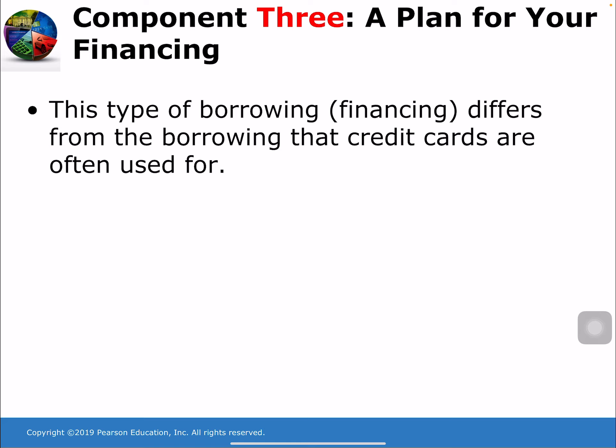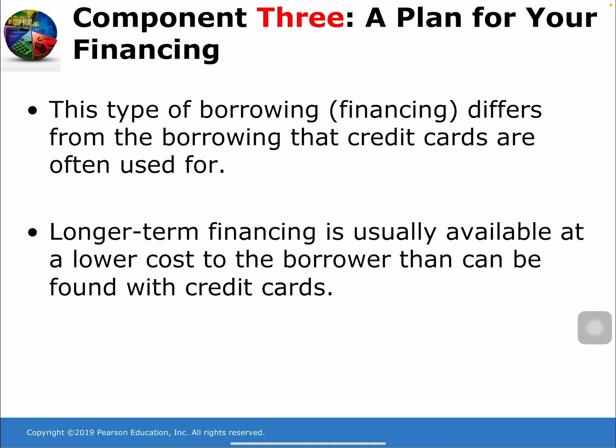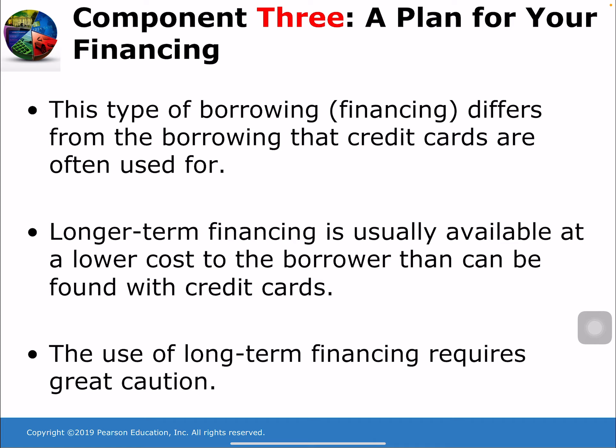This type of long-term financing differs from borrowing that credit cards are often used for. Long-term financing is usually available at a lower cost to the borrower than credit cards. So for a home, car, or boat, it's much cheaper to borrow through a bank or financial institution. However, long-term financing requires great caution — if you cannot pay back the money you borrowed on a car, the lender can repossess it. You would lose the car plus the down payment you already paid. For most big-ticket purchases, the item is used as collateral and the lender can seize the asset if you fail to make payments.